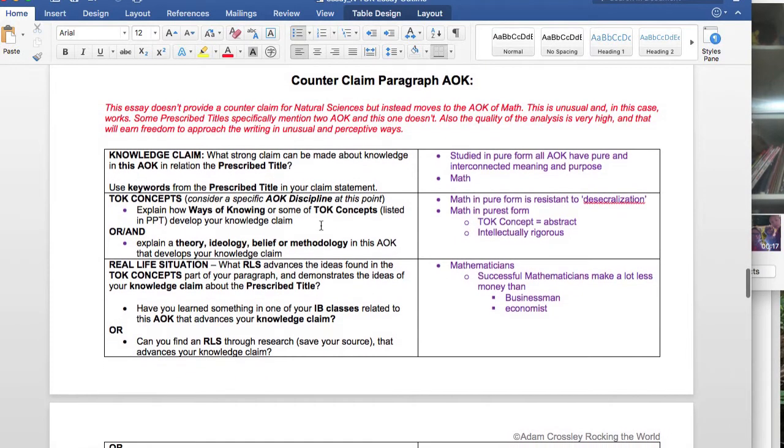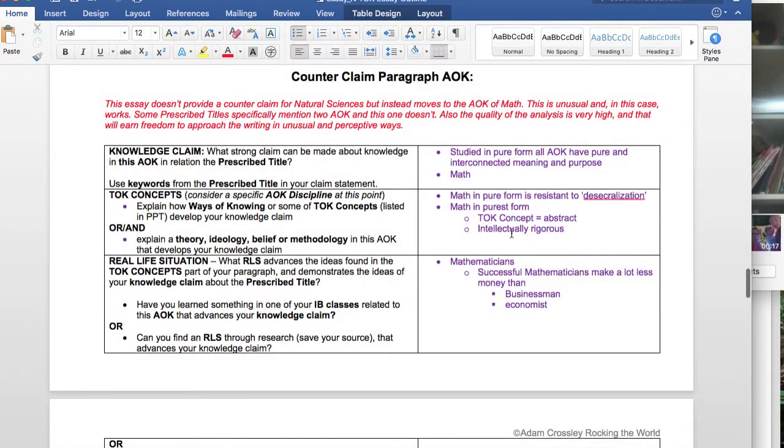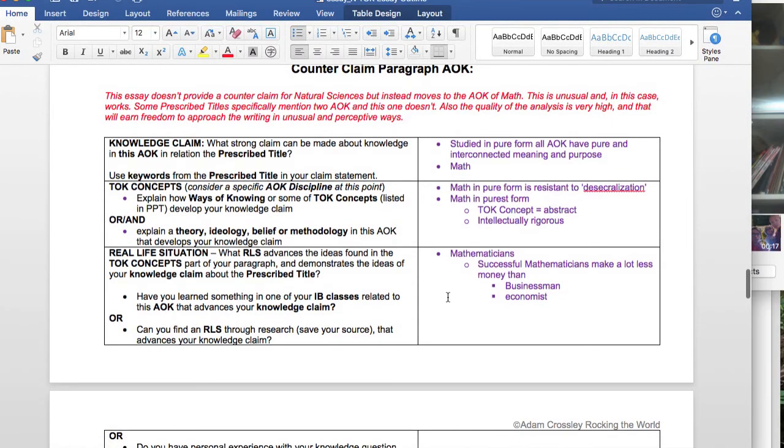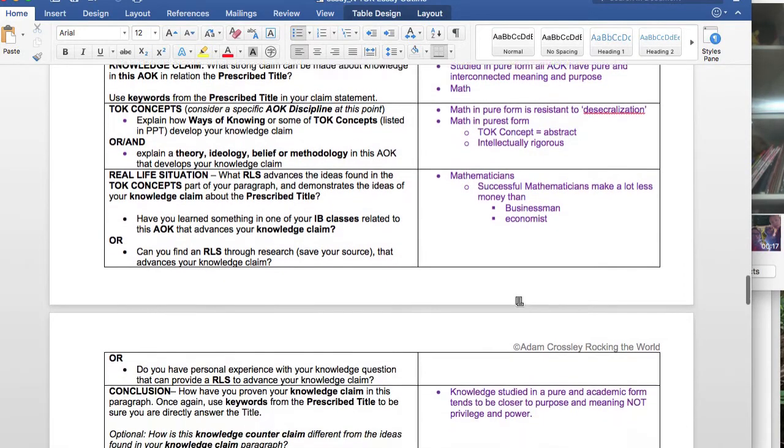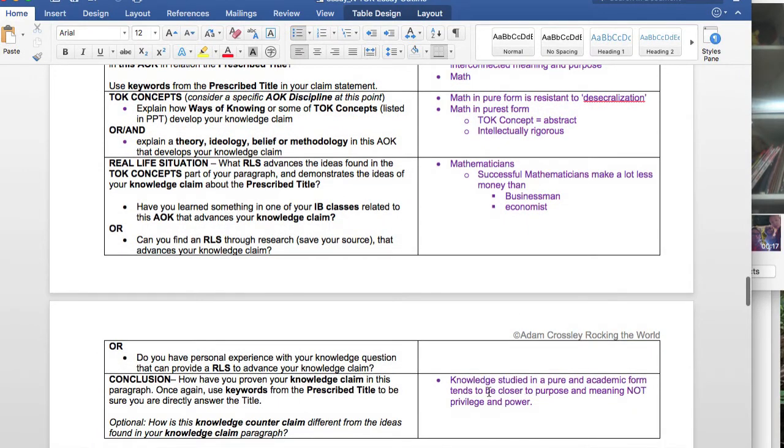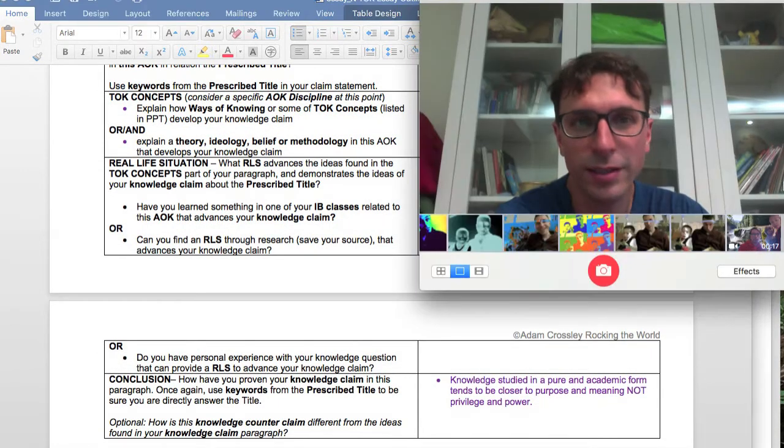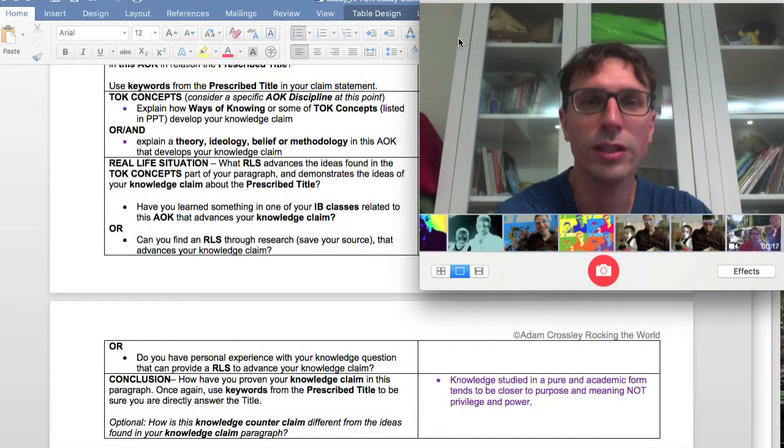The concept here is quite simple, that math is very abstract and it's very intellectually rigorous, and if you wish to study math, then you need to really love math and that's your purpose and your meaning. They draw a line between businessmen and economists who might use math, but they're not studying pure math. And they say that if you're studying as a pure academic mathematician, then you're going to be very connected to meaning and purpose, which is an interesting point.